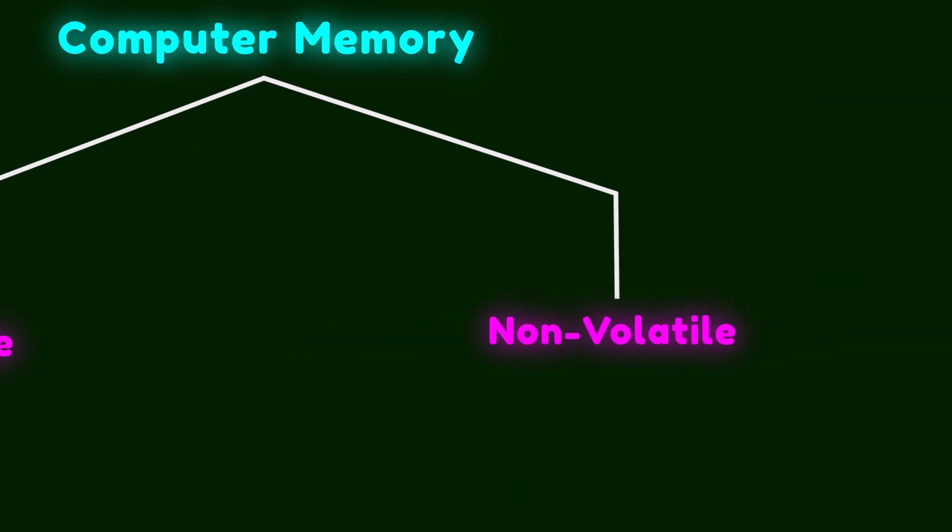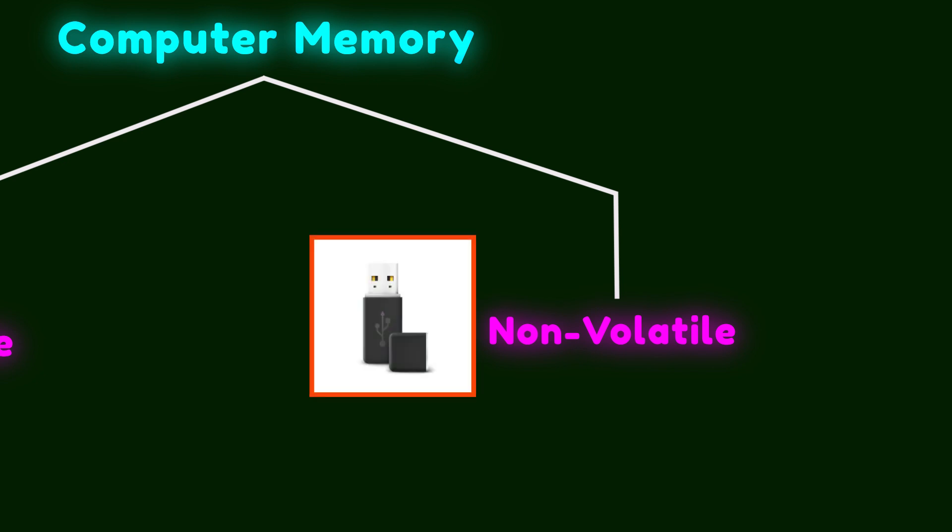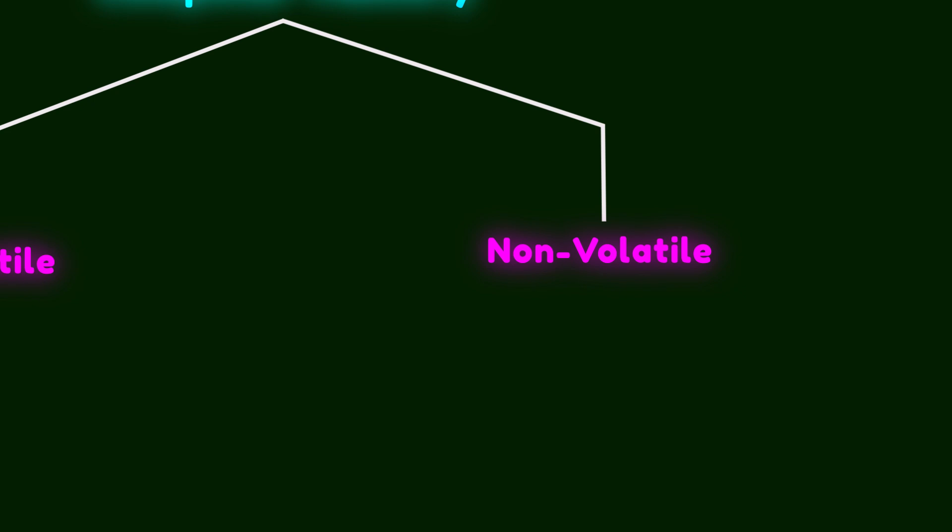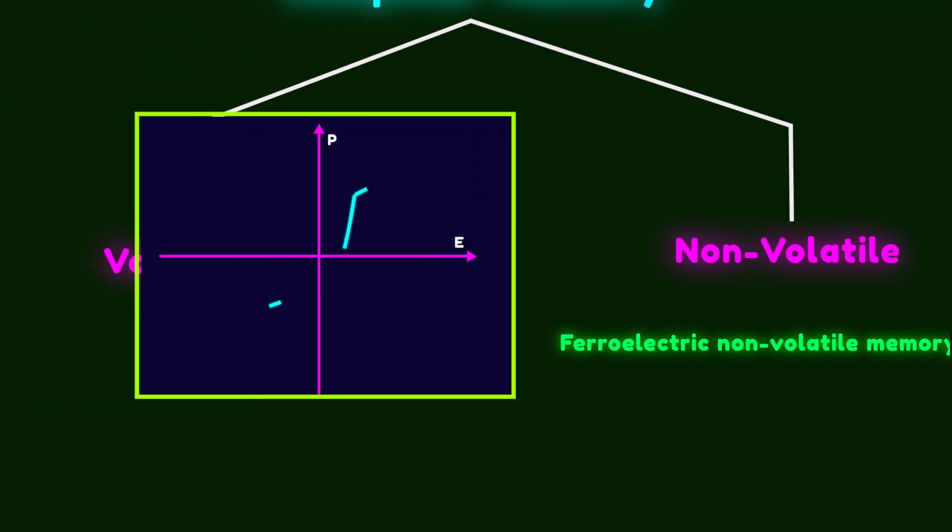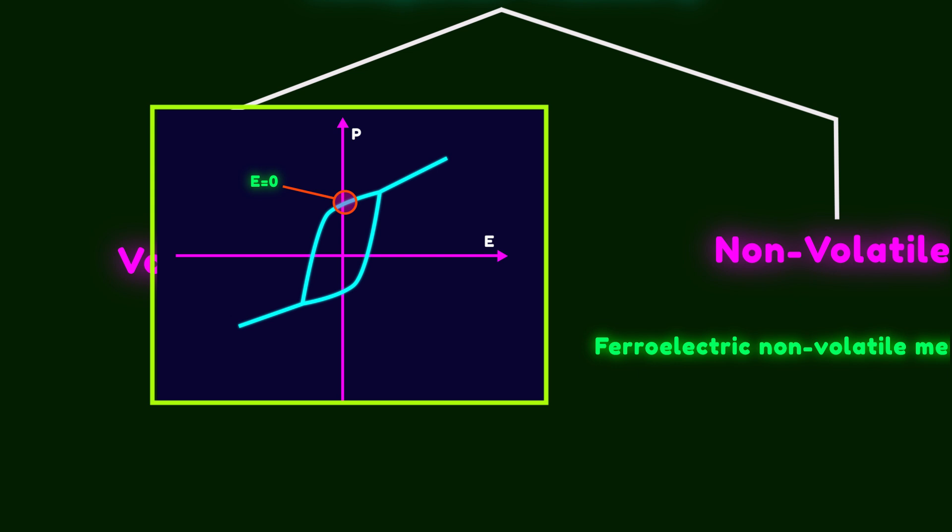Non-volatile memories, on the other hand, can store information regardless of whether the power is on or off. Flash memory is a good example that you also use daily. This property makes non-volatile memories stand out from other types of memories. There are actually different types of non-volatile memories. But ferroelectric non-volatile memory devices are among the most promising for future commercial applications. Remember the hysteresis loop of ferroelectrics. Even when the external electric field is zero, the compound still shows polarization. That means it can be used to store information even when the power is off.